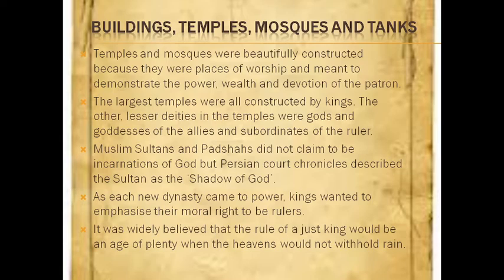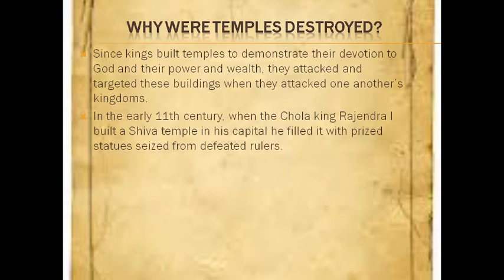The other lesser deities in the temples were gods and goddesses of the allies and subordinates of the ruler. Muslim sultans and padshahs did not claim to be incarnations of God, but Persian court chronicles described the sultan as the shadow of God. As each new dynasty came to power, kings wanted to emphasize their moral rights to be rulers. It was widely believed that the rule of a just king would be an age of plenty, when the heavens would not withhold rain.